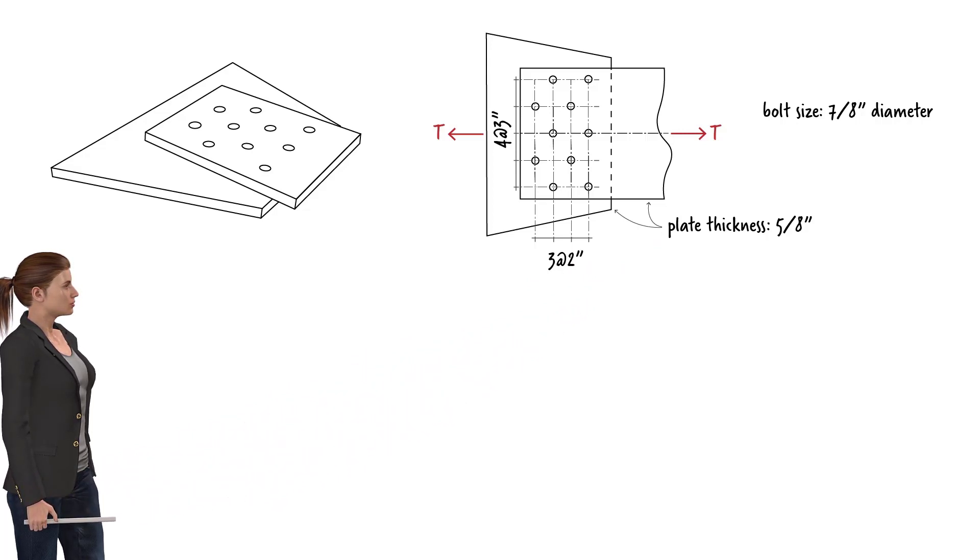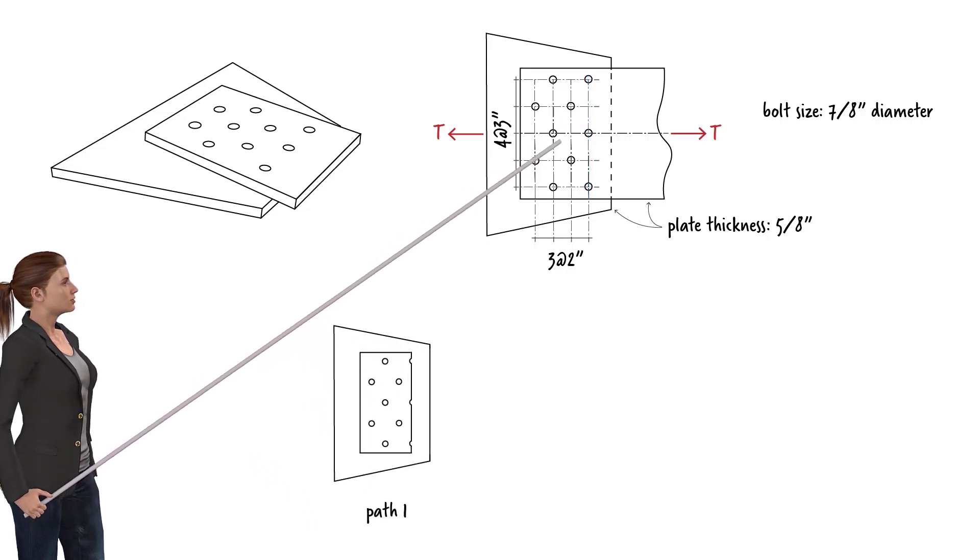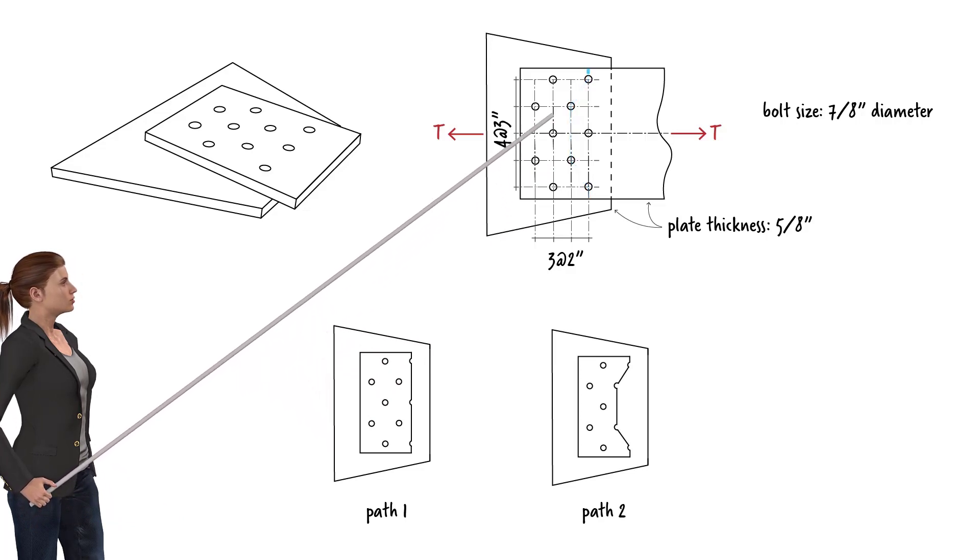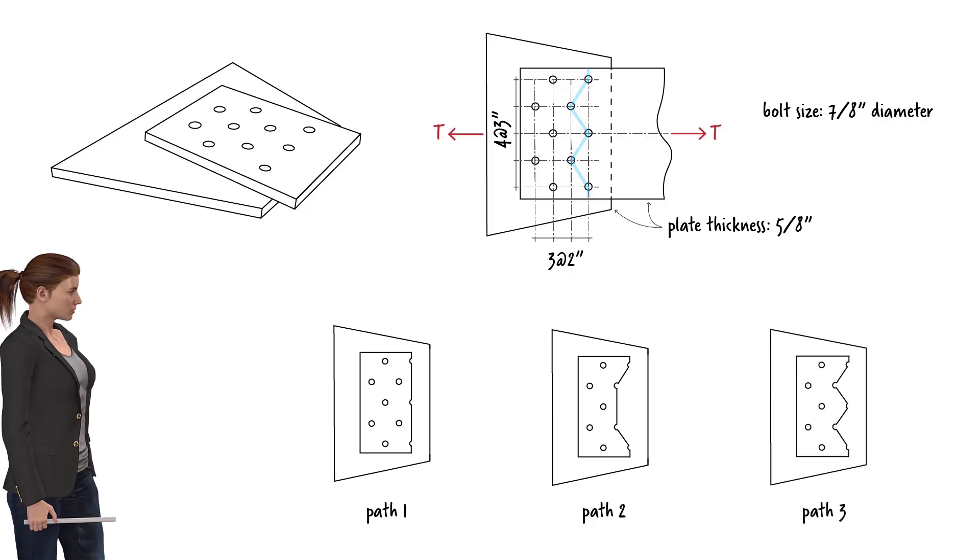Here we can identify three possible failure paths for the net section rupture. The tension member could fail along this path, this path, or this path. The path with the smallest net area governs the design.